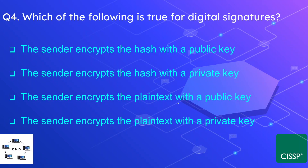Question number four: which of the following is true for digital signatures? The options are: the sender encrypts the hash with a public key; the sender encrypts the hash with a private key; the sender encrypts the plaintext with a public key; or the sender encrypts the plaintext with a private key. The correct answer is the sender encrypts the hash with a private key. In a digital signature, the sender first hashes the plaintext and then encrypts it with their private key.